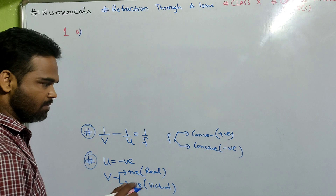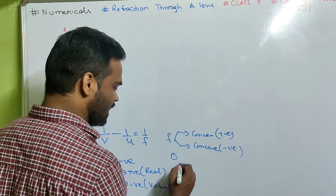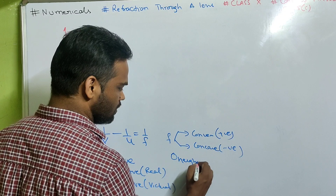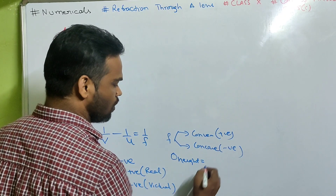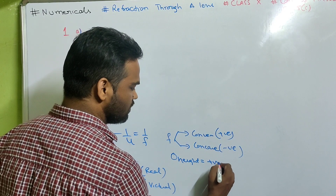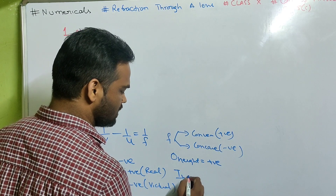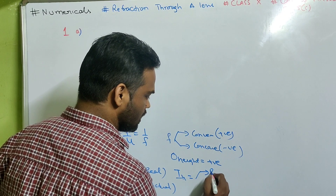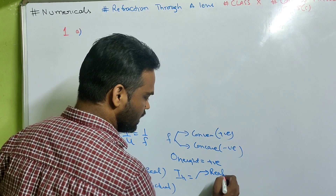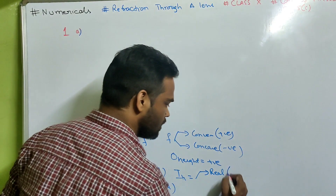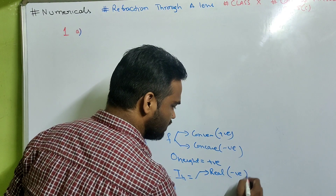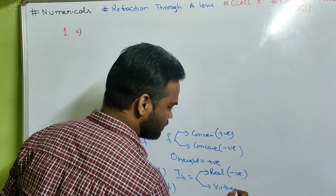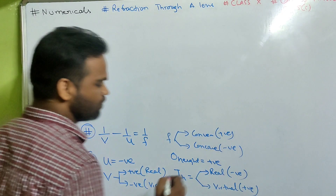Object height (OH) is always positive. Image height (IH) has two cases: if we get a real image, it's negative; if we get a virtual image, it's positive.